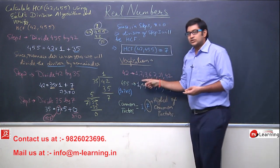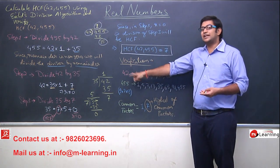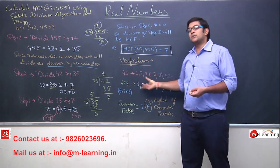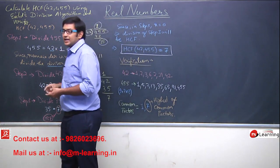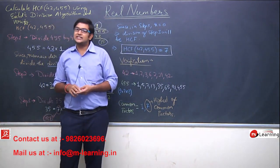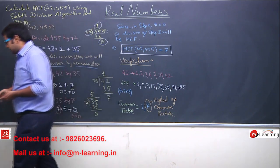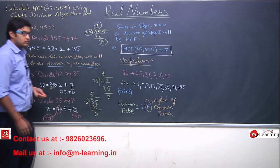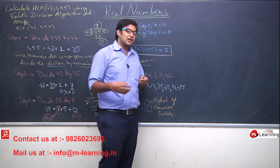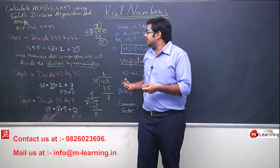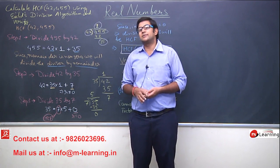Now you can see this process may be complex if I have large numbers. Agar mujhe bahut bade numbers de diye jaye, to ye process bahut lambi ho jayegi. Isi liye better kya hoga? Main Euclid division algorithm apply karo ke unhe solve karo aur unka HCF determine karo.